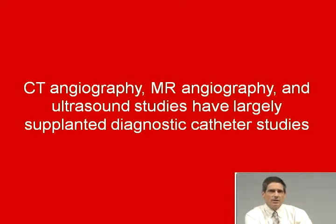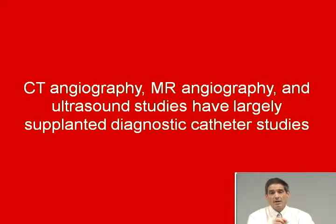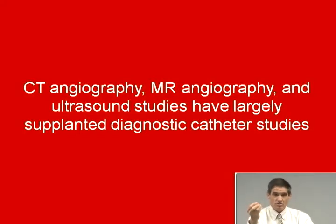Catheter angiography nowadays is usually used to confirm or disprove results from non-invasive vascular imaging, and to allow for intravascular intervention. For example, if you have an aneurysm, you can put a coil in it; if you have a stenosis, you can put a stent across it. Beyond those generalizations, specific recommendations for vascular imaging vary a lot by body part. Vascular imaging is also performed relatively frequently in asymptomatic individuals for screening purposes.